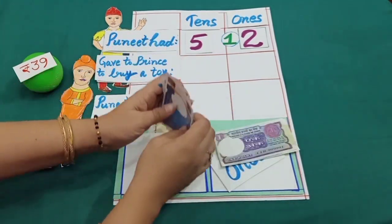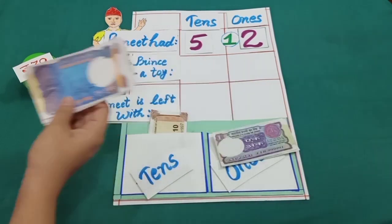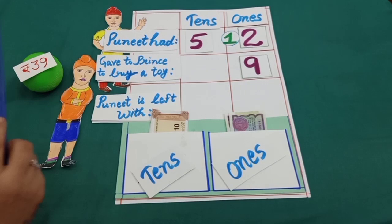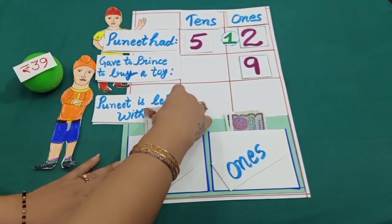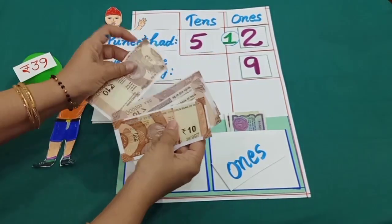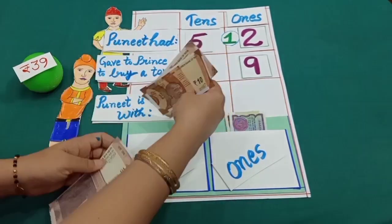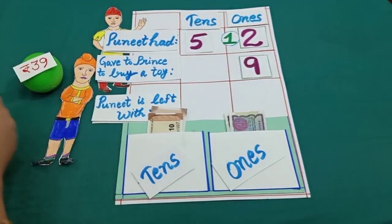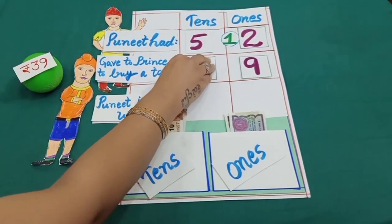And he can also easily give 30 rupees to Prince to buy a toy. 10, 20, 30, and 30 is equal to 3 tens.